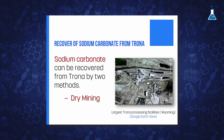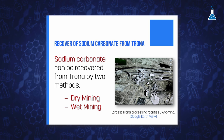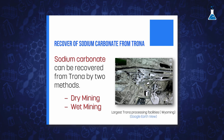For recovering the residual trona, wet mining is used by injecting a solution from the surface which dissolves the mineral, forming an alkali-rich solution that is then pumped back to the surface for processing. This wet mining procedure can also be used in previously unmined ground.